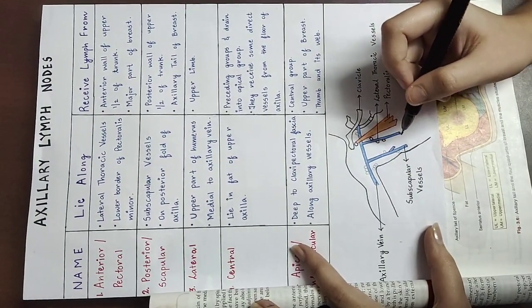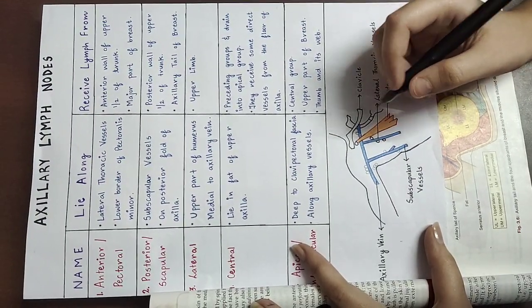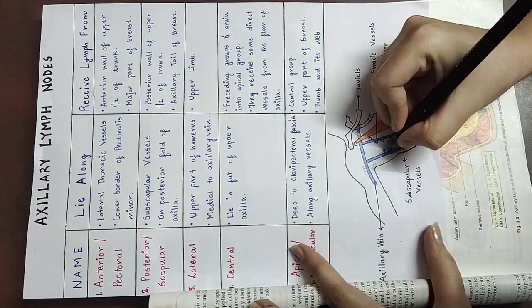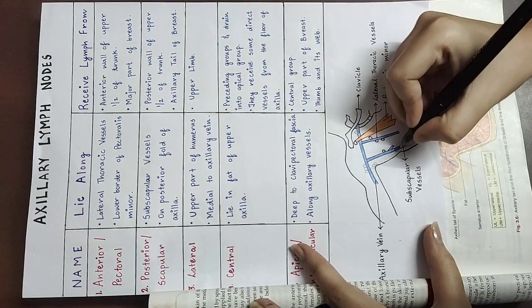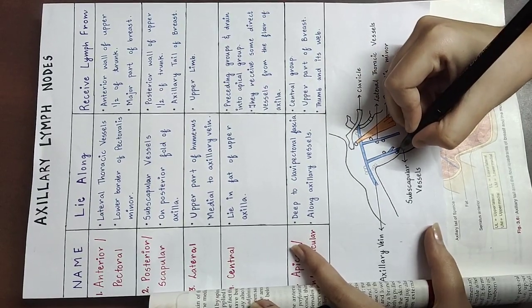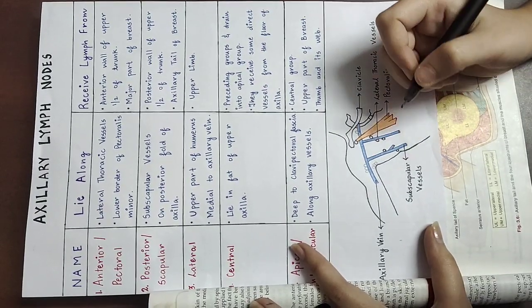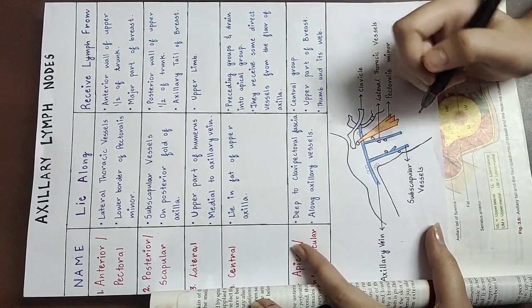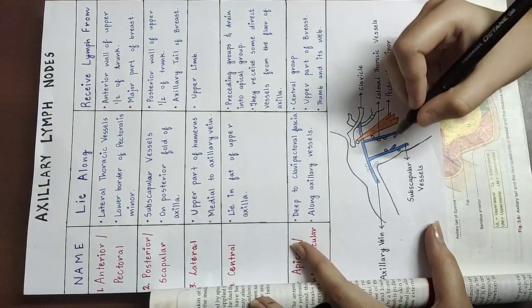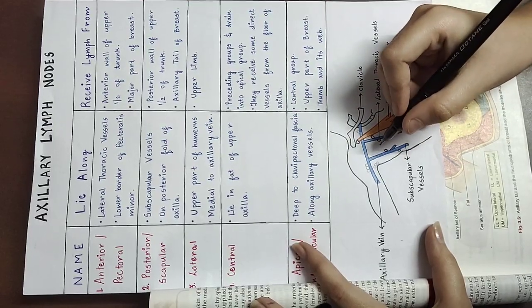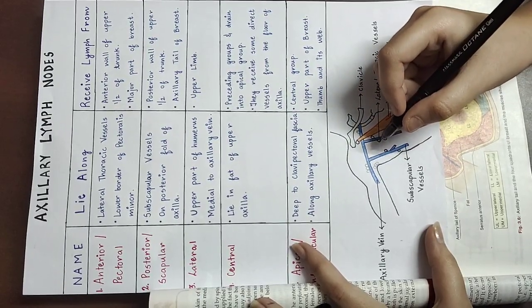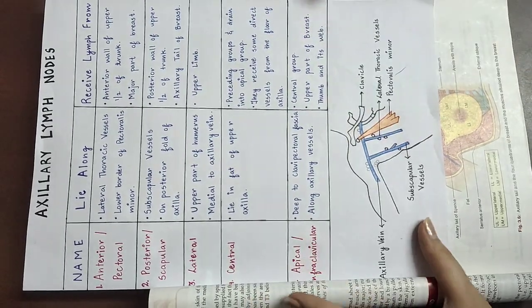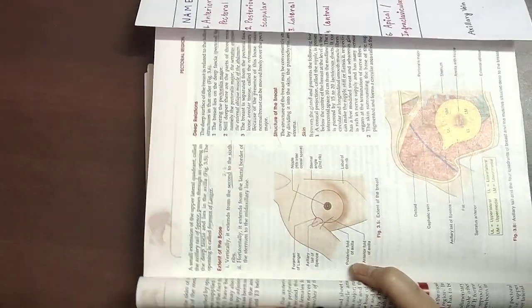Second comes the posterior or scapular group — scapular because they lie along the subscapular vessels and on the posterior fold of the axilla.